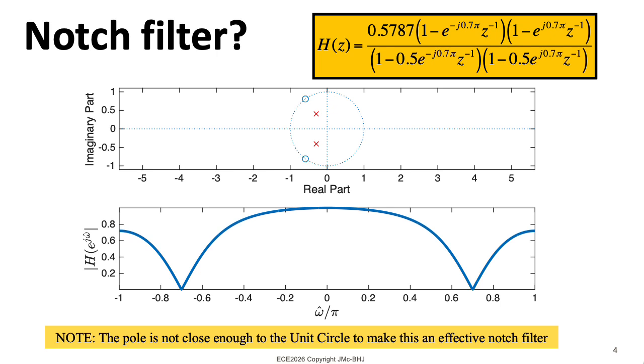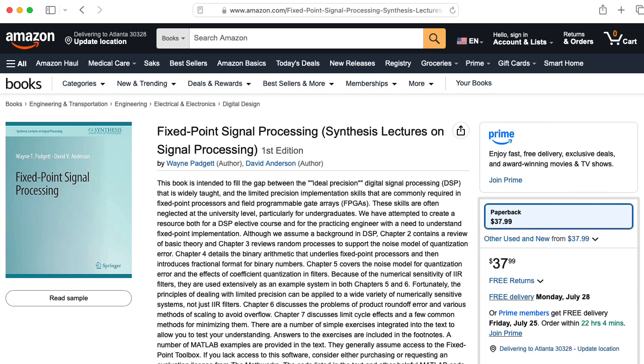In any case, to have an effective notch filter, you would want these poles to be closer to the unit circle. But in practice, you can't put the poles too close to the unit circle because issues related to finite precision can lead to problems.